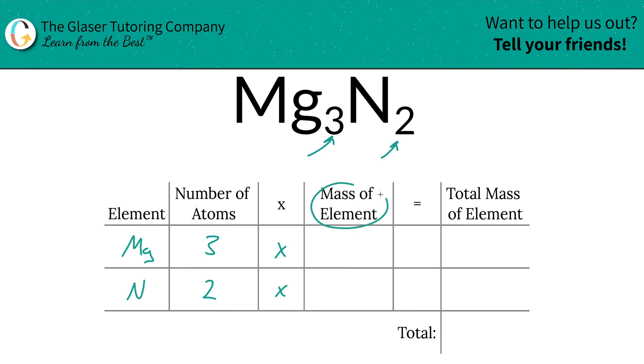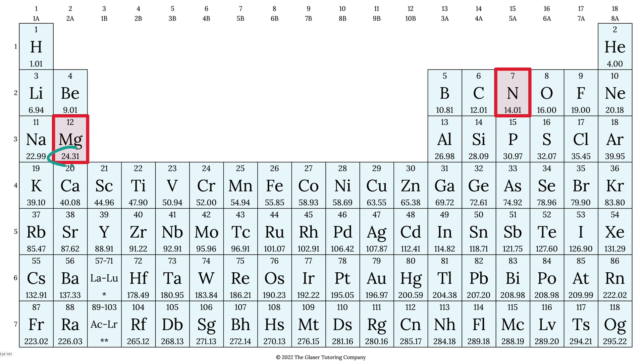Then we're simply going to multiply those number of atoms by the mass of each element. Those masses are found on the periodic table. So here's magnesium 24.31, nitrogen is 14.01.